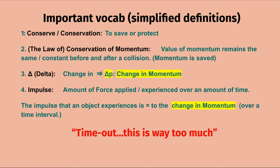Let's move on to some important vocabulary. 'Conserve' or 'conservation' simply means to save or protect. In physics, the law of conservation of momentum means the numerical value of momentum remains the same before and after a collision. Delta — the triangle symbol — means 'change in,' so delta-p means the change in momentum. Impulse is the amount of force applied or experienced over an amount of time, and it equals the change in momentum over a time interval.